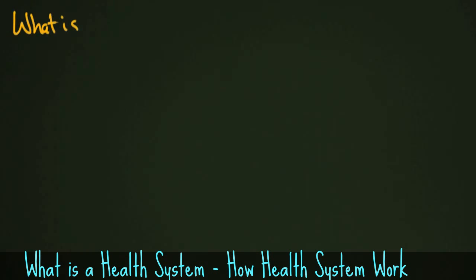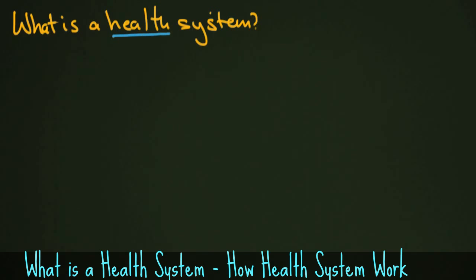What is a health system? If you go and take a look at the definition for a health system, you might not be very surprised at the answer, because it's basically defined as an organization of people, institutions, and resources to deliver health-related services to meet the needs of a target population. But what does that mean? What does that look like, and how does it work?